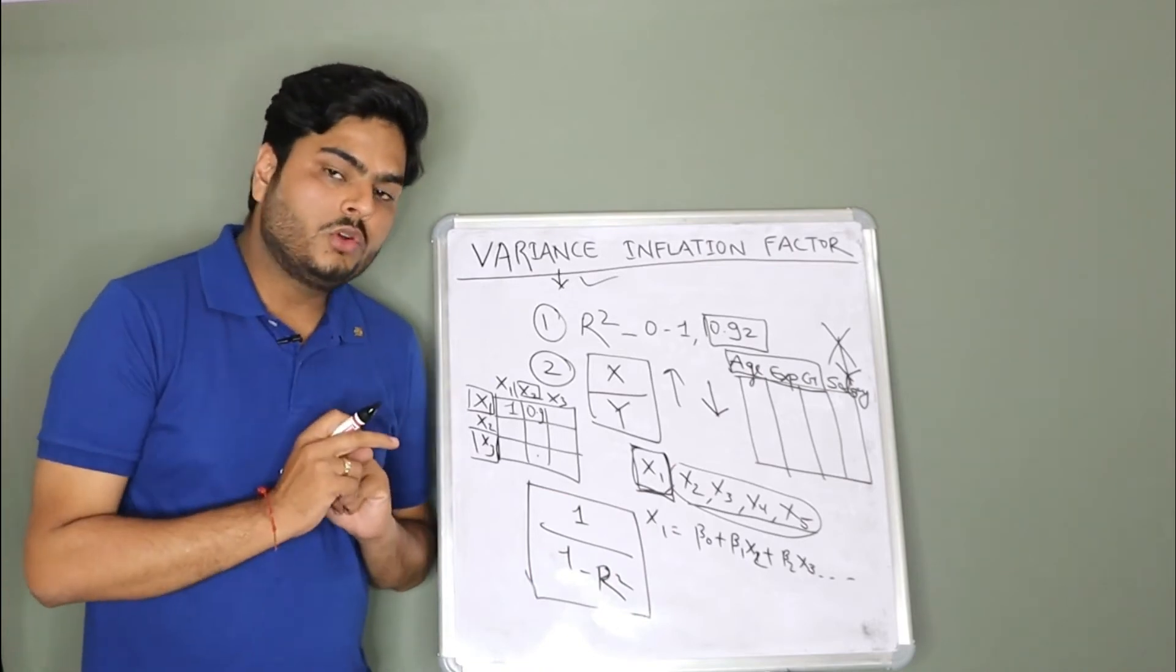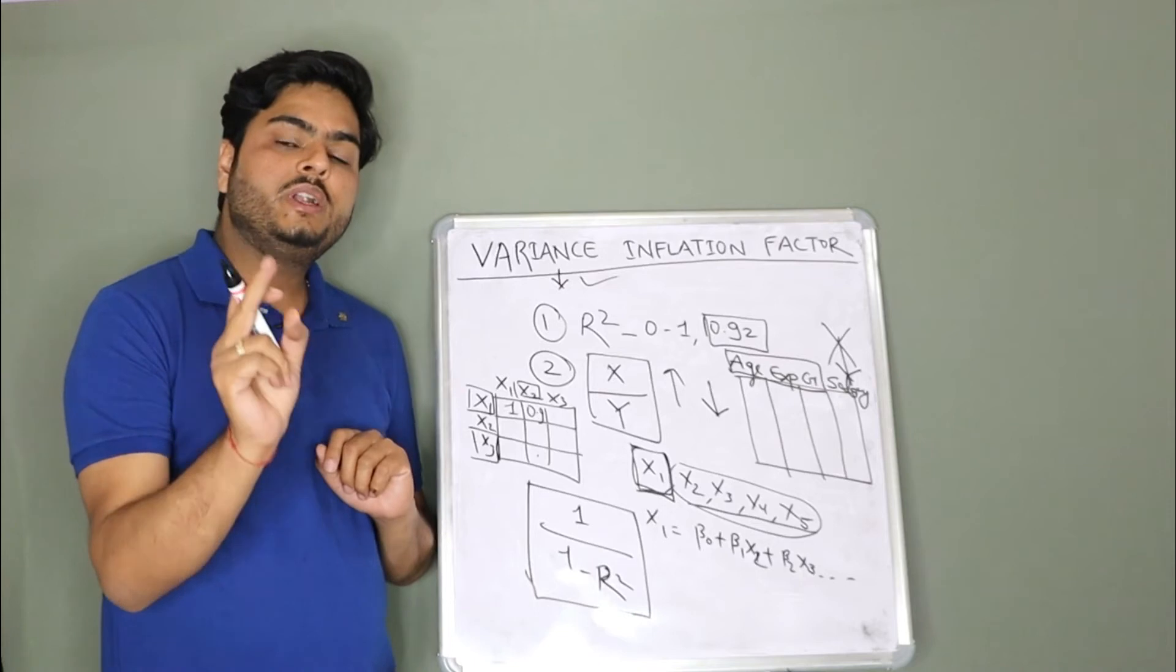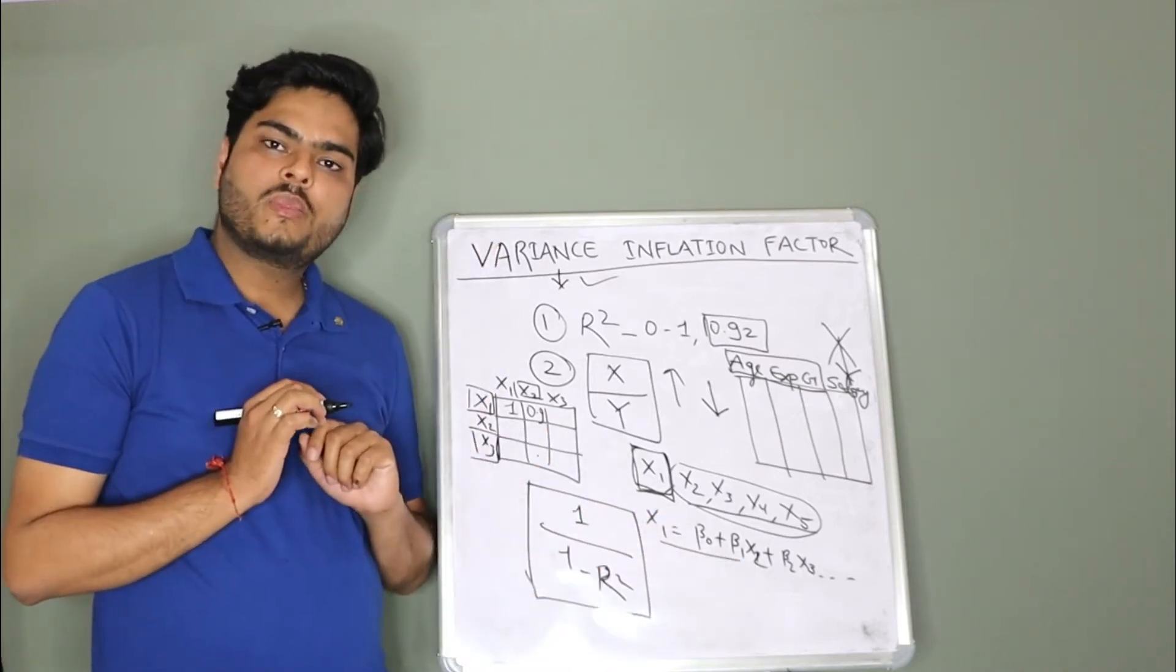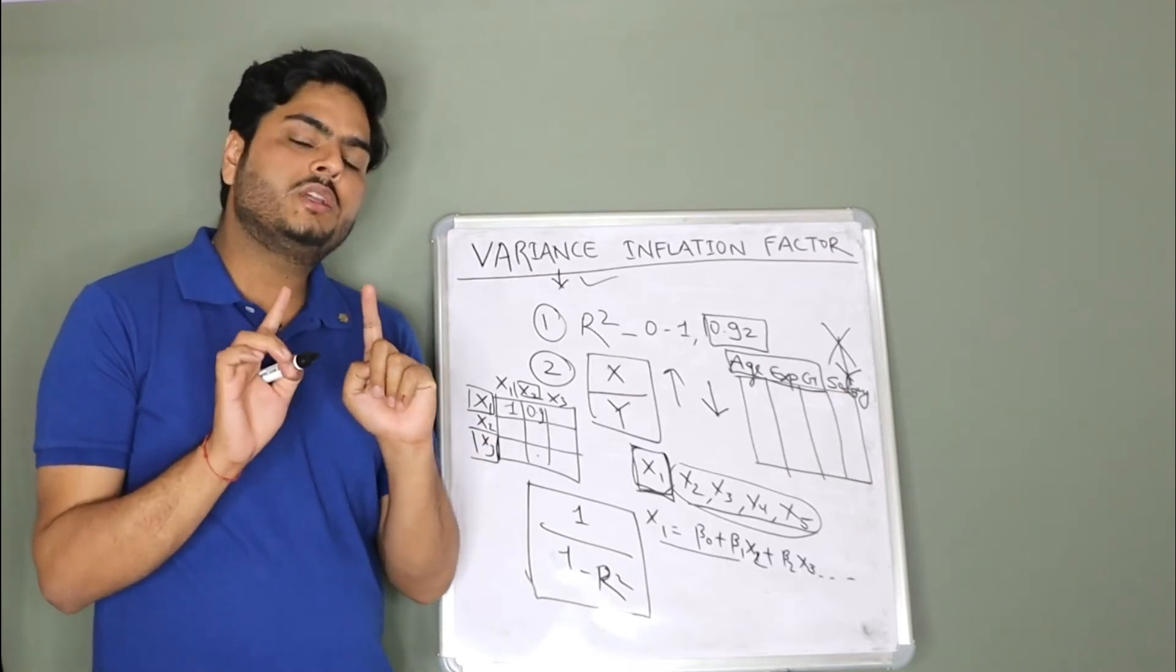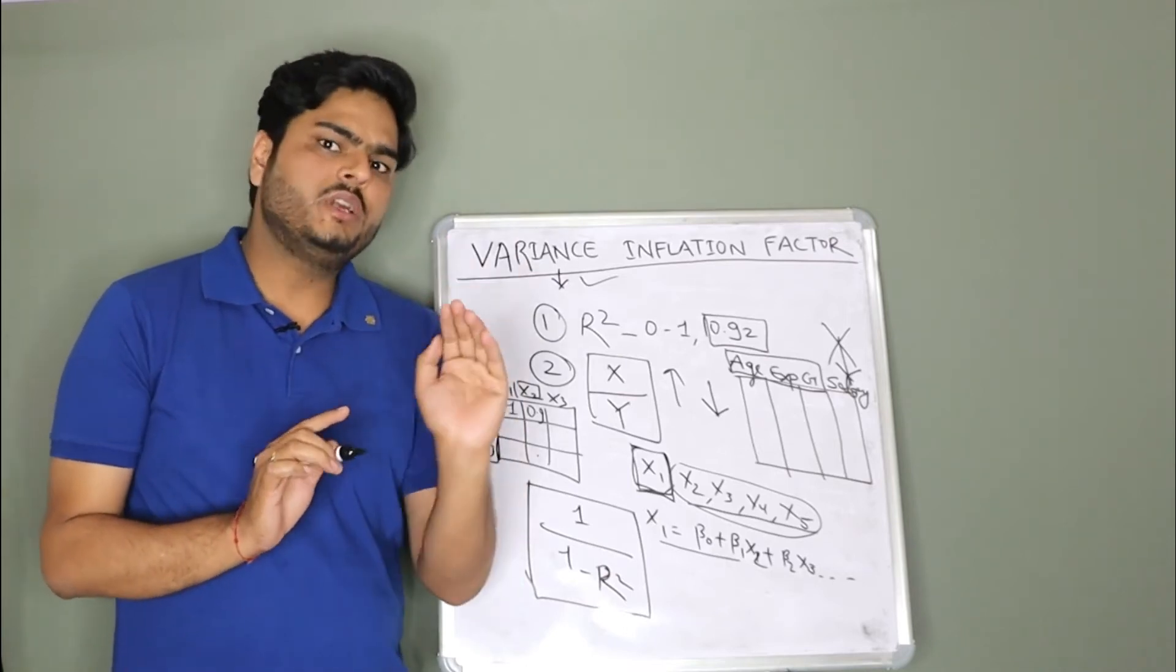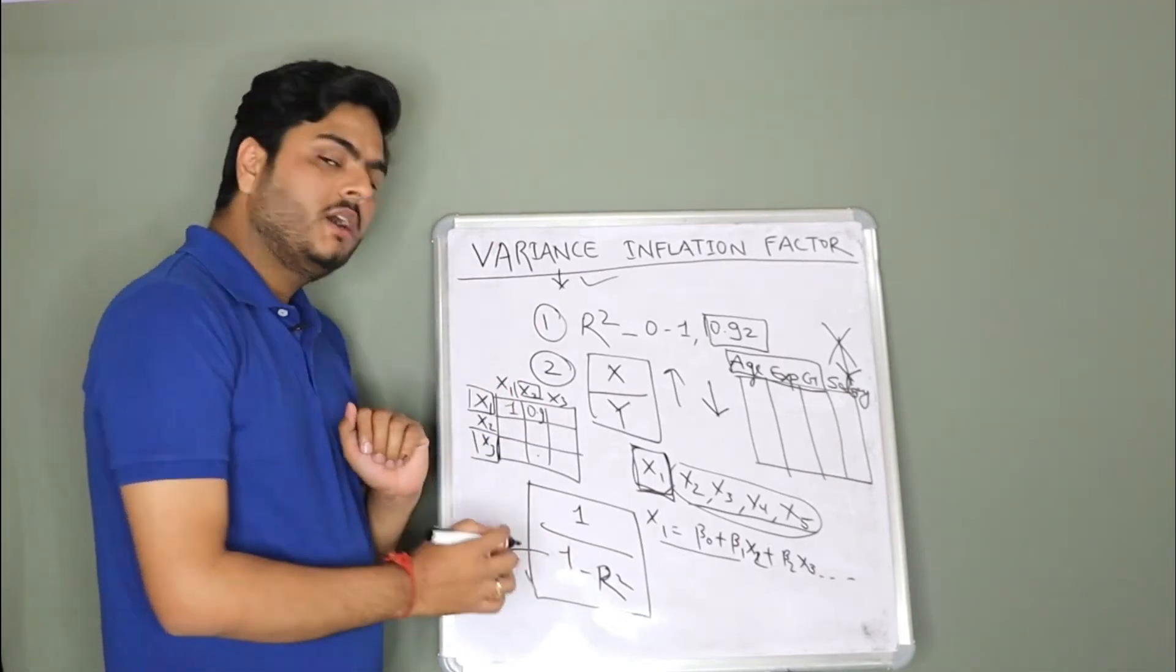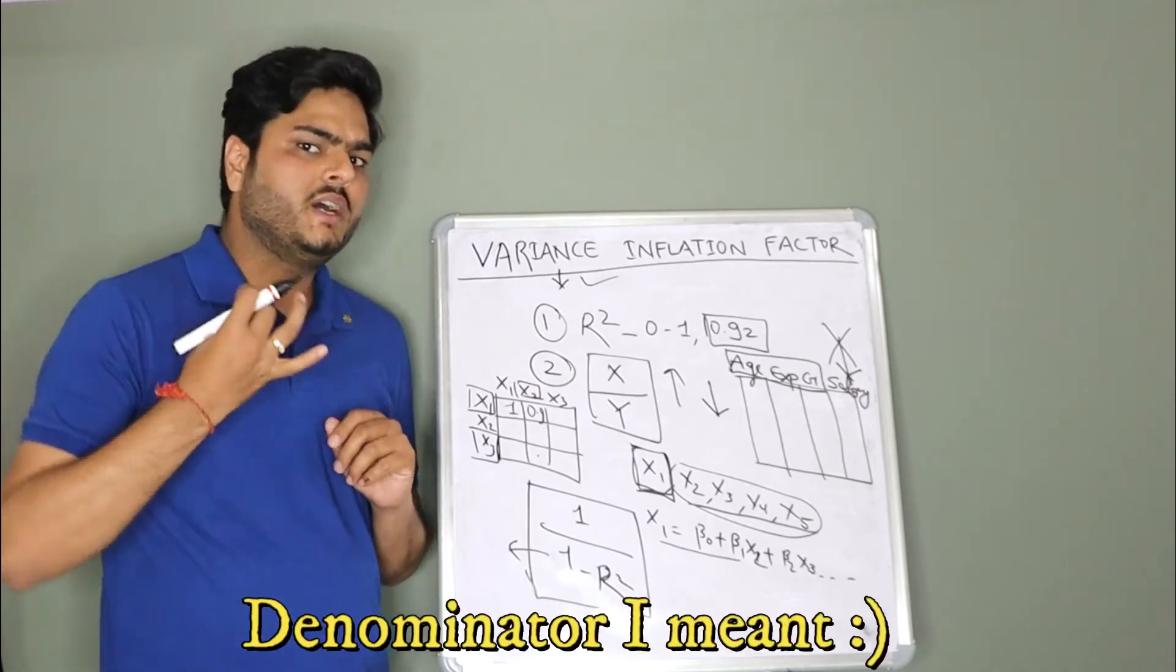So if I ask you tomorrow, what is the VIF of variable x1? You will take R square from this regression model and put it here. Now, let us assume two scenarios. One scenario where R square is very high. Let us assume that. If R square is high, then numerator will be high or low. You have to tell me.